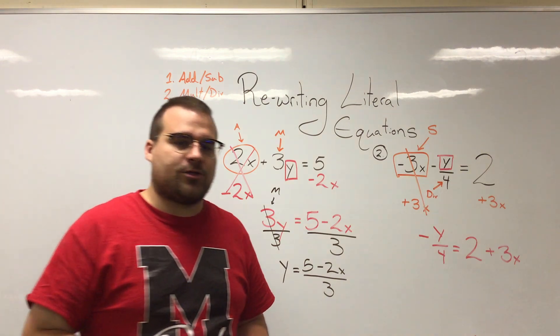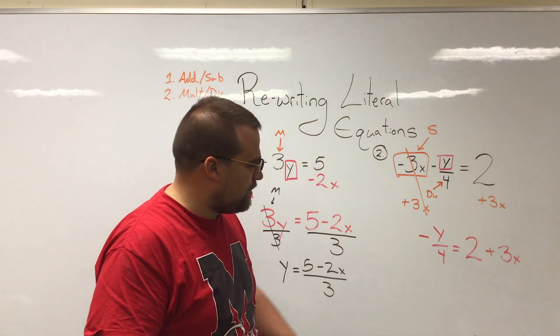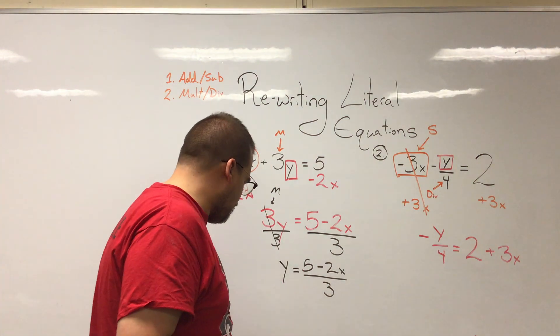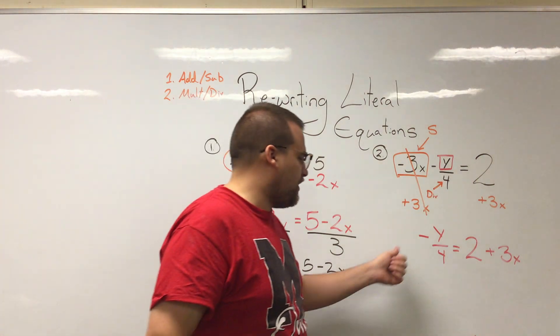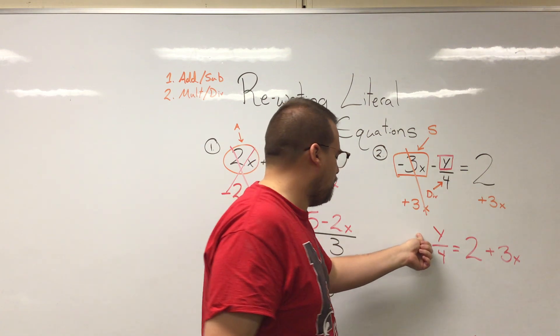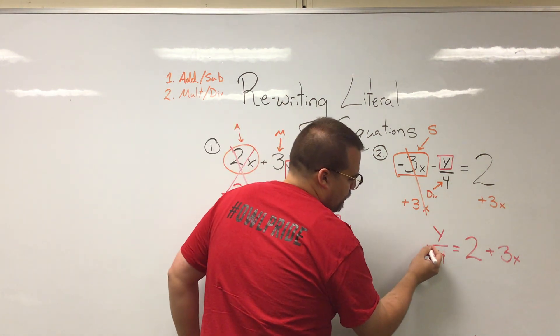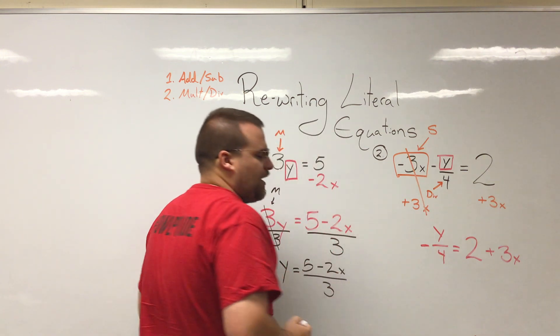Now if I want to get y on its own all that I have left to deal with is that 4. And here's a really important thing to think about. This is negative y over 4. I want to write that negative kind of out in front here. It looked a little bit more like it was just in front of the y.